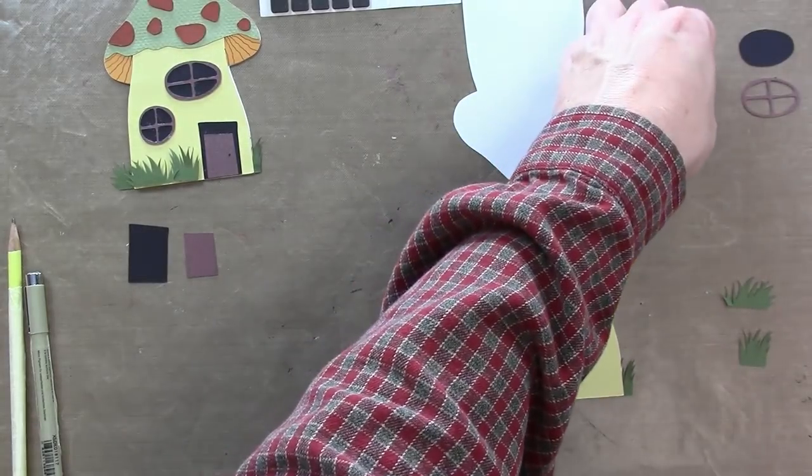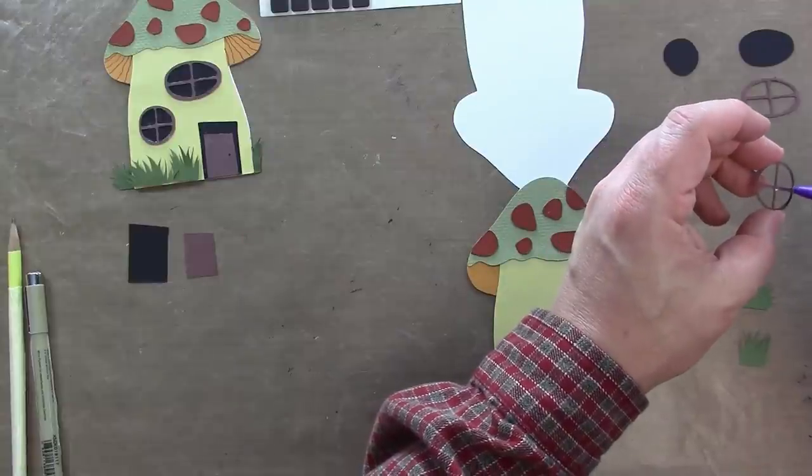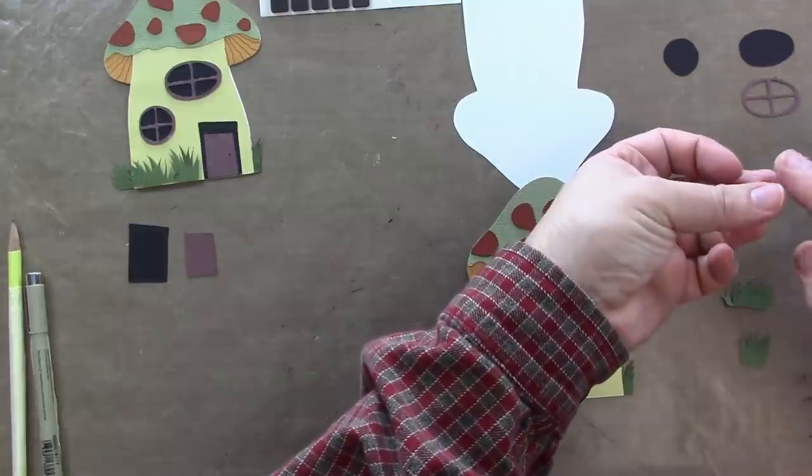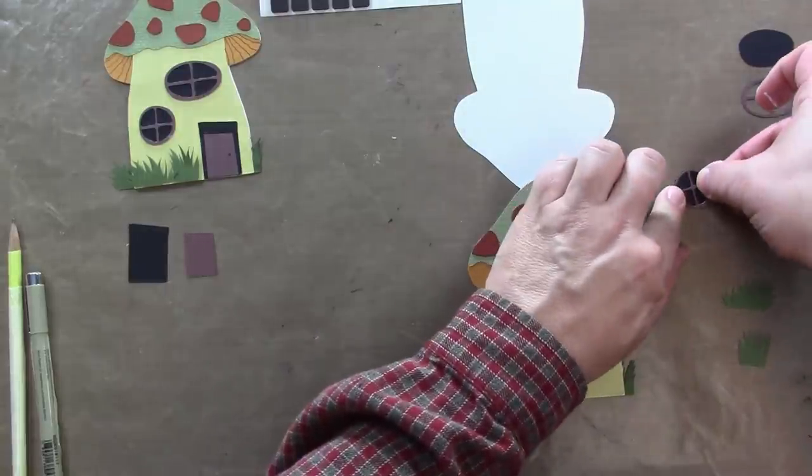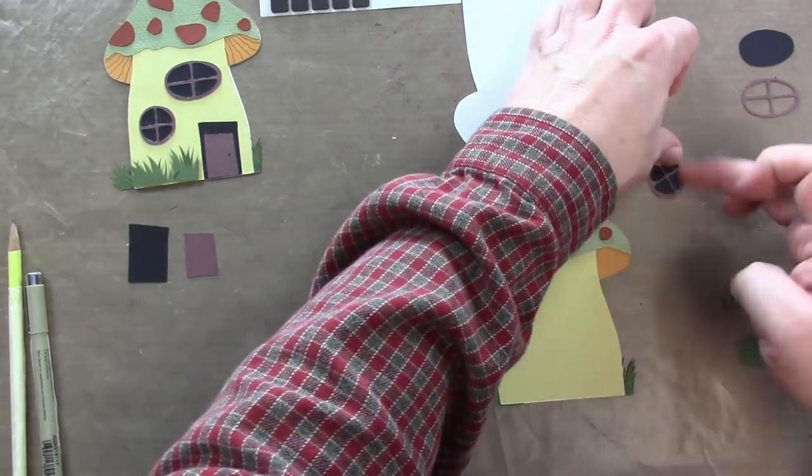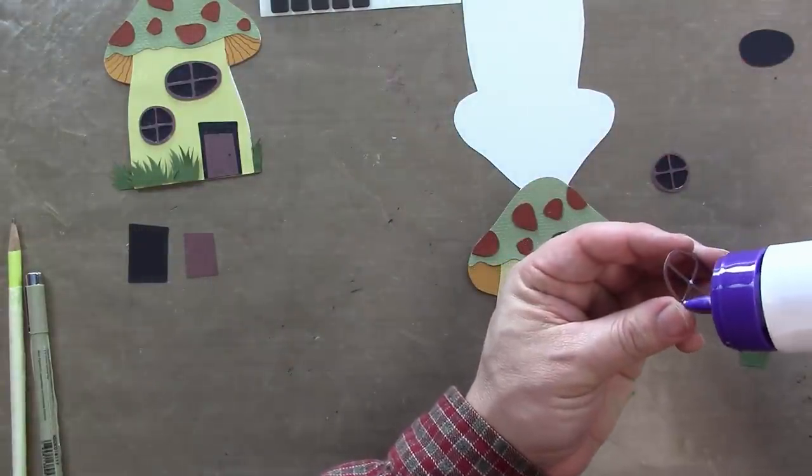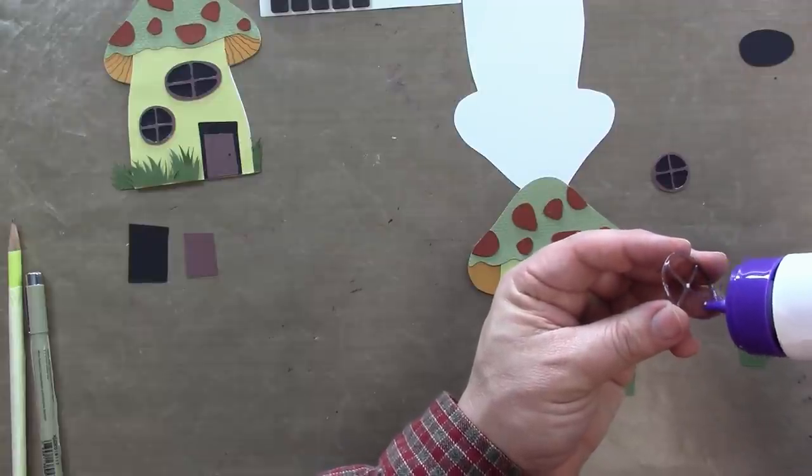Next we'll work on the window frames. We're going to adhere the background of the frame to the front of the frame. Line them up first so you know roughly how it goes, and then again with a liquid adhesive you can move it around a little bit. If you want to take your card up a notch instead of a black background, consider printing out the inside of a house, like a living room or a kitchen, and using that instead of the black, because then when you look in the windows you'd actually be seeing inside the house.